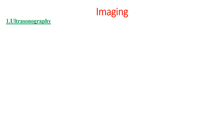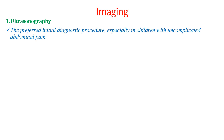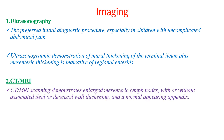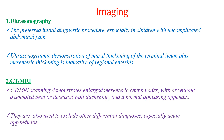The most important imaging modality suited to diagnosis of mesenteric lymphadenitis is ultrasonography. Ultrasonographic demonstration of mural thickening of the terminal ileum plus mesenteric thickening is an indicator of regional enteritis. CT and MRI are also used to demonstrate enlarged mesenteric lymph nodes and to exclude other differential diagnoses, especially acute appendicitis.